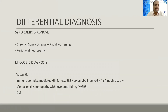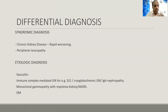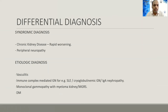The syndromic diagnosis is chronic kidney disease that is rapidly worsening, with peripheral neuropathy. Etiologically, conditions causing both renal disease and neuropathy should be considered: vasculitis, immune complex glomerulonephritis such as SLE, cryoglobulinemia, monoclonal diseases, and diabetes as a differential.